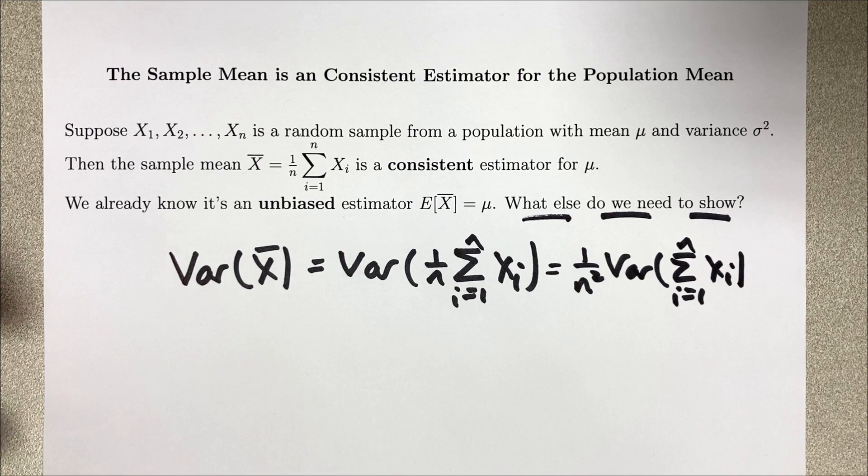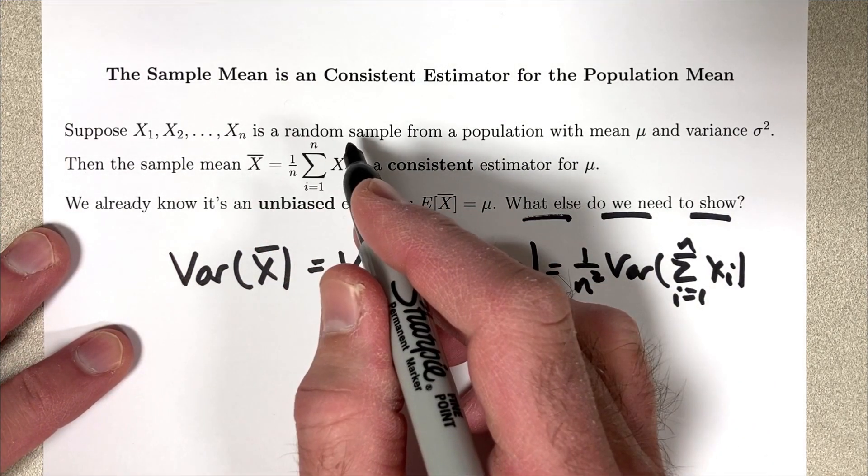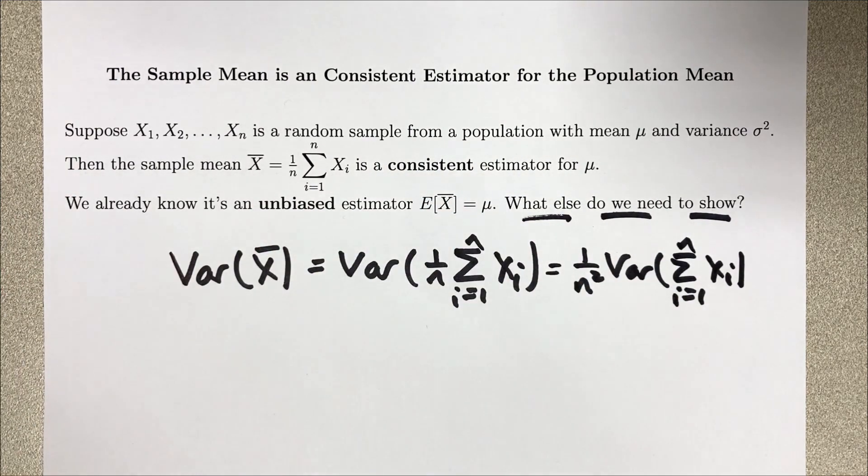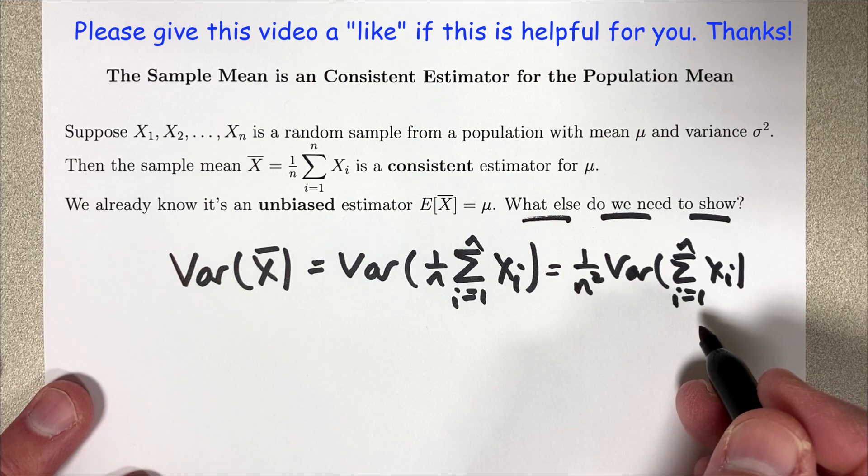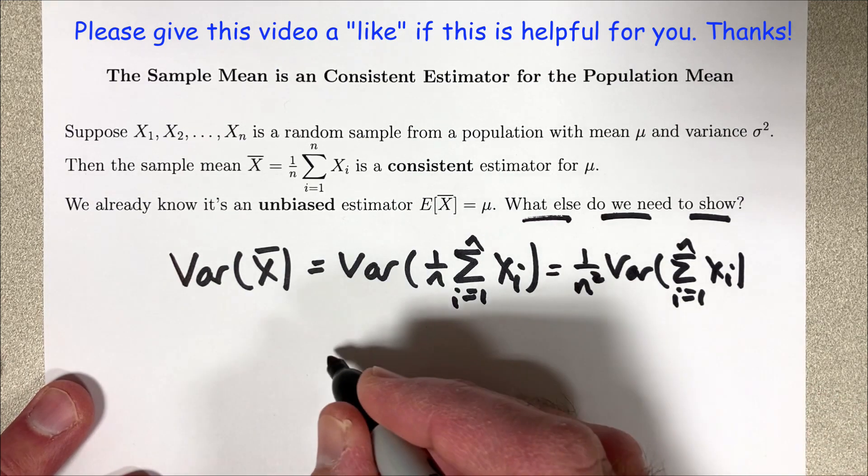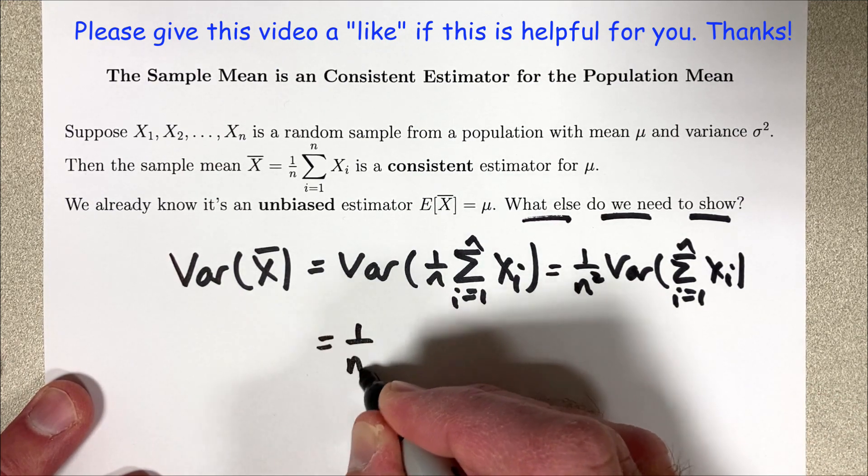but we do need the assumption that this is a random sample, which means these random variables are assumed to be independent. You can only pull the summation out of the variance operator when you assume your random variables are independent. We are assuming that here, so we can pull the summation out.